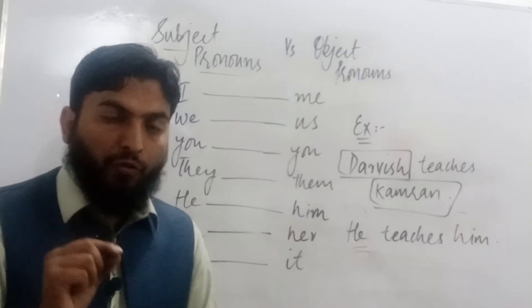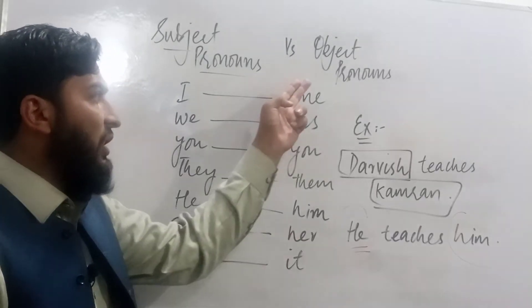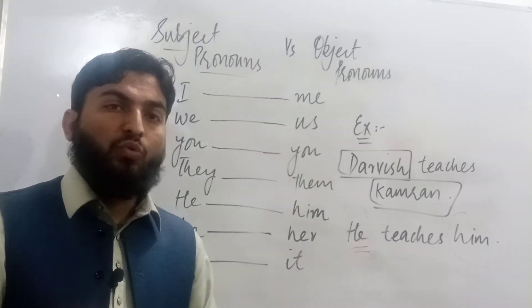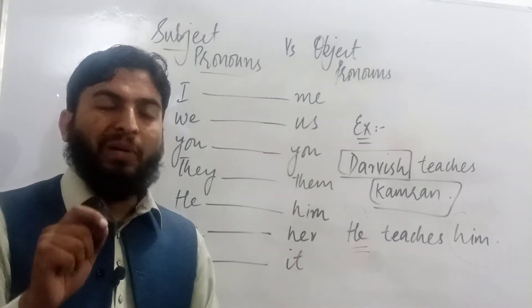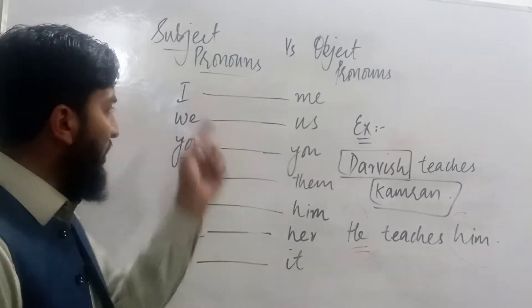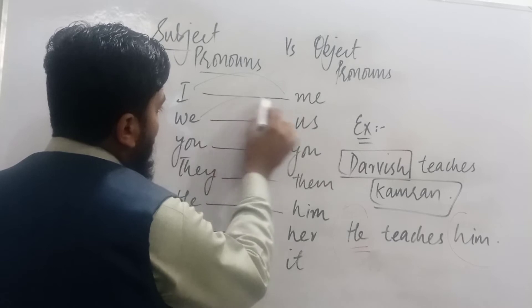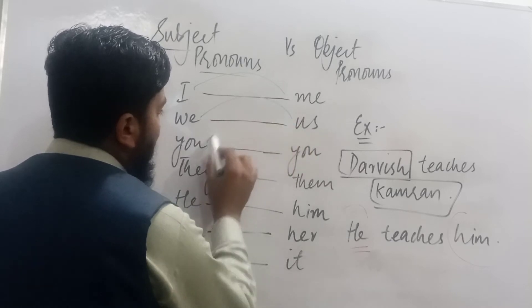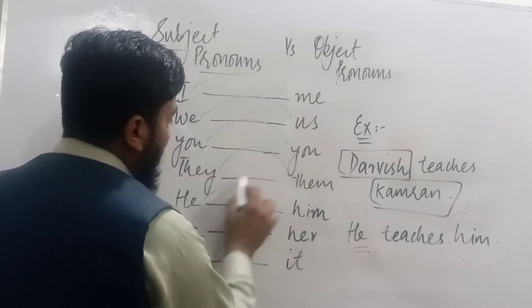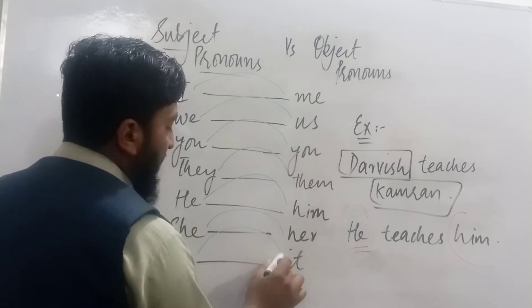For each subject pronoun there is an object pronoun. Object pronouns are defined as those pronouns that are used in place of the object in a sentence. For example: for I, we use me; for we, we use us; for you, you; for they, them; for he, him; for she, her; for it, it.